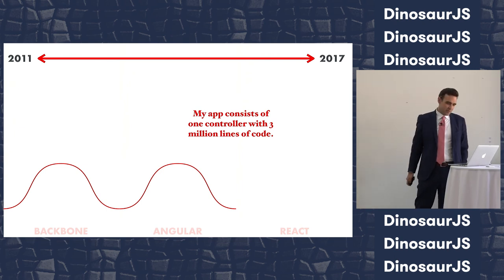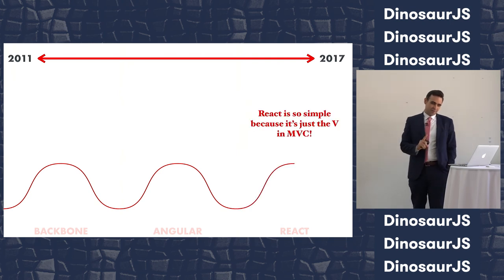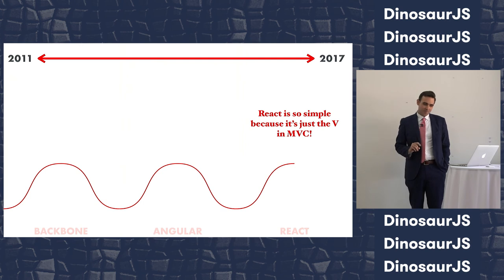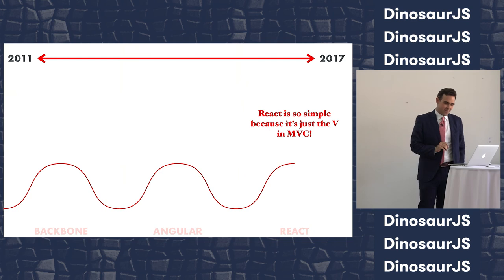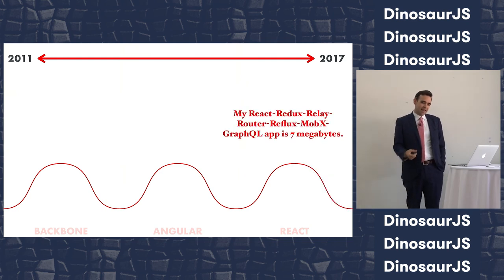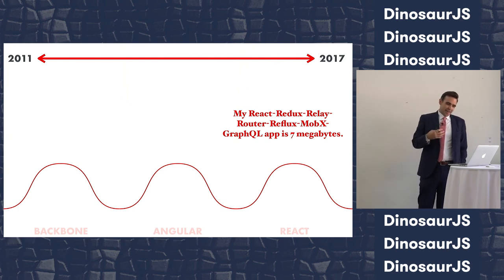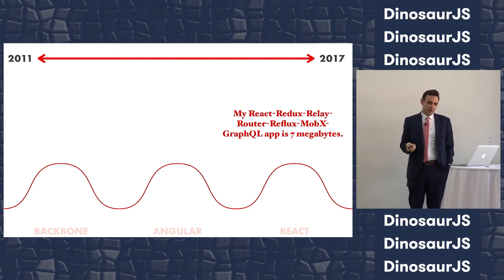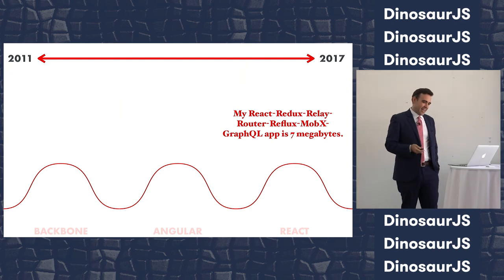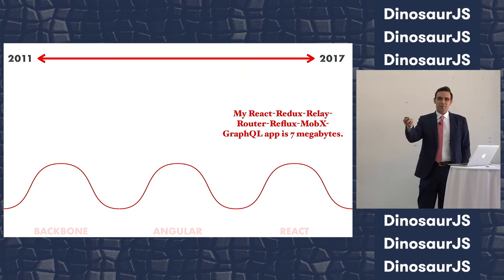React solves this problem by being so much simpler than all that Angular spaghetti. How? It can be simpler because it's just the V in MVC. But after building a big enough app, you discover you actually need more than the V in MVC. All of a sudden your React Redux Relay Router Reflux MobX app weighs in at seven megabytes, becoming the F in WTF. And no one understands how the Webpack config works.